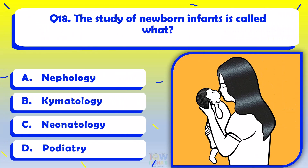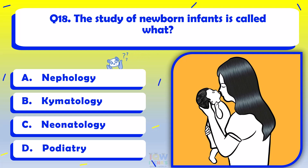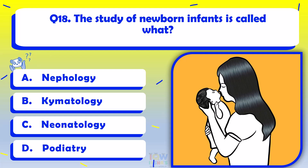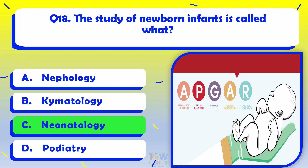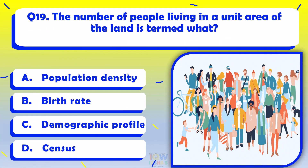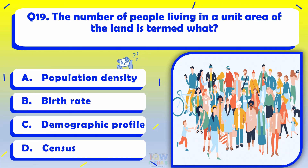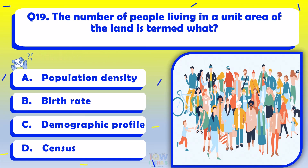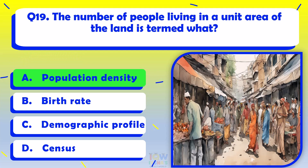The study of newborn infants is called what? Neonatology. The number of people living in a unit area of the land is termed what? Population density.